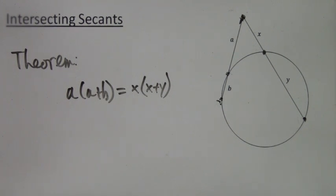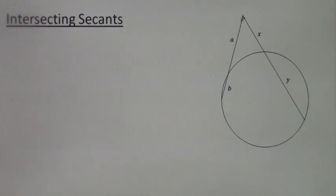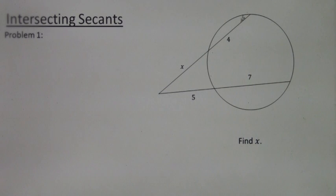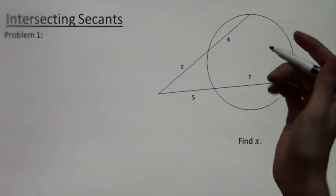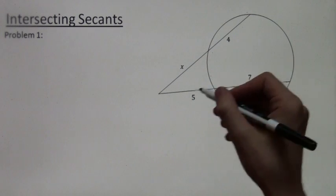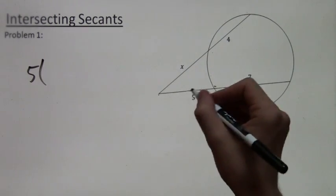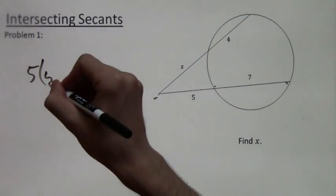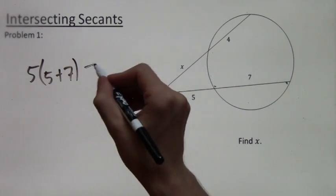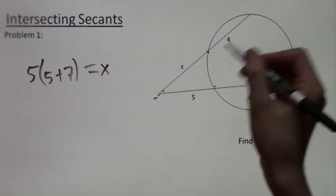Now let's apply this to a few example problems and calculate some lengths. Here we're looking for x. We apply the theorem. We have 5 times 5 plus 7, the whole length, is equal to x times the whole length, which is x plus 4.